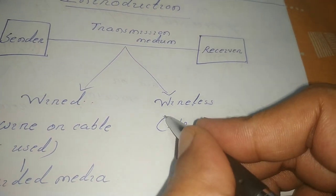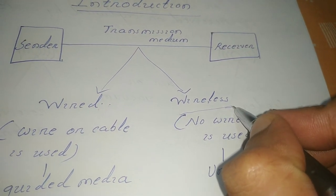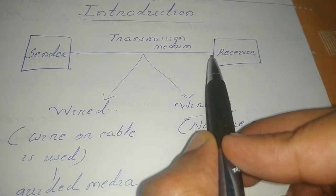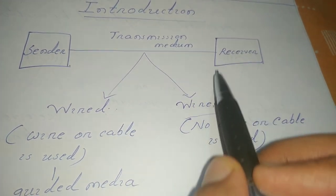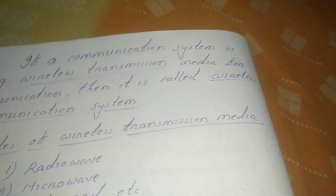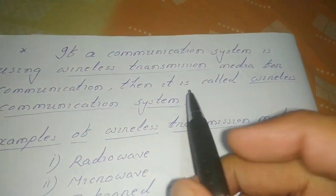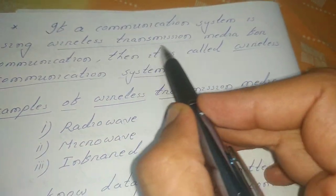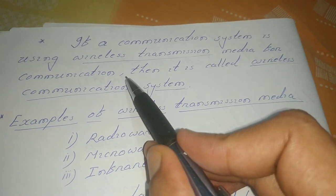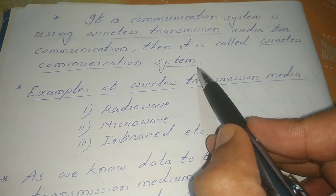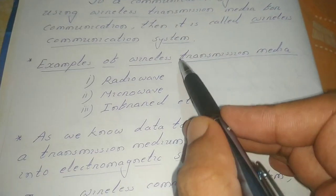Here we will study the wireless transmission medium — how a message or data is communicated from the sender to the receiver without using any form of cable or wire. That type of communication system is termed a wireless communication system. So if a communication system uses a wireless transmission mode or media for communication, it is termed a wireless communication system.